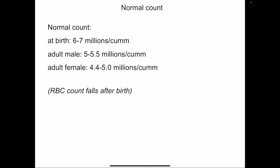The normal count of red blood cells at birth is around 6 to 7 millions per cubic millimeter, while in adult males it is 5 to 5.5 millions per cubic millimeter, and in adult females it is lesser at 4.5 to 5 millions per cubic millimeter.